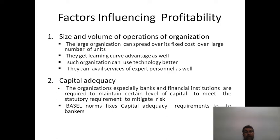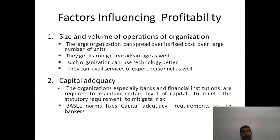For example, consider ticket vending machines for a bus transportation company. A private individual running one bus cannot afford such technology because the huge fixed cost cannot be spread over large units. But Karnataka's KSRTC, with its large fleet, can introduce technology effectively because the cost is spread across many buses. Smaller operators are constrained by fixed costs that cannot be distributed widely.